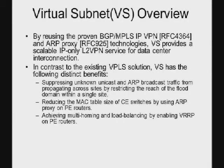Virtual Subnet is a very simple idea. By using the proven layer-2 VPN and ARP proxy technology, it can provide an IP-only layer-2 VPN service. Compared to the existing layer-2 VPN solution, Virtual Subnet has the following benefits: first, suppressing unknown unicast and ARP broadcast flooding, since VS can restrict the reach of the flooding domain within a single site; second, reducing the MAC table size of CE switches; third, achieving multi-homing and load balancing by using VRP.